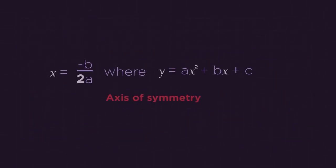We can easily find the x coordinate of the turning point by using this simple equation. So b is the value in front of the x in the equation and a is the value in front of the x squared.